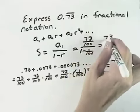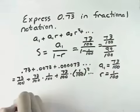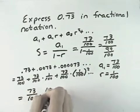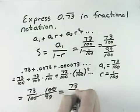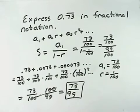Because it's 73 over 100 divided by 99 over 100. Now if we flip and multiply, we'll see that 73 over 100 times 100 over 99, the 100s cancel, leaving 73 over 99 as an equivalent form in fraction form for our repeating decimal.